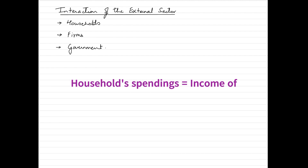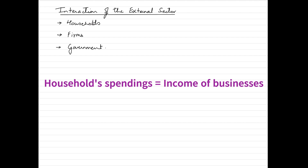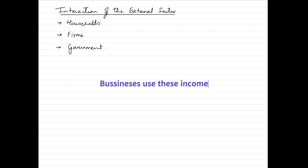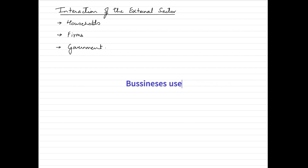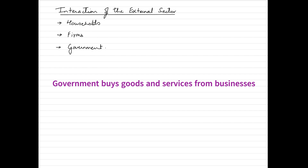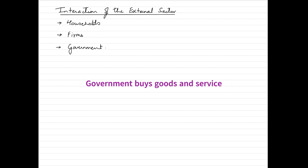Businesses use this income to pay for the resources they purchase from households and also invest in new production techniques or technologies. The government also spends money on goods and services produced by businesses, which is also an income flow for the businesses. The fourth sector is the external sector, introduced in this particular model.